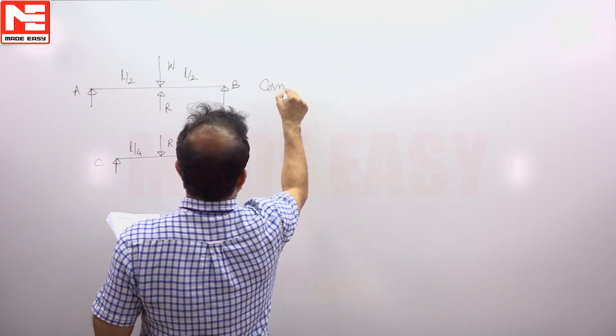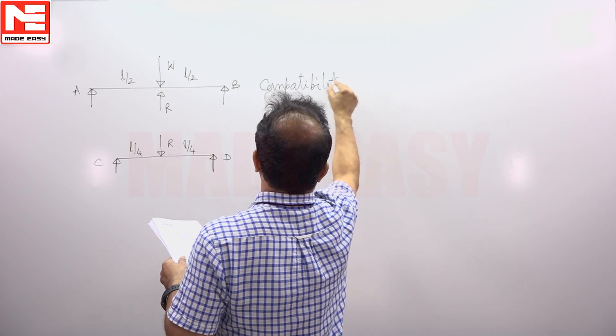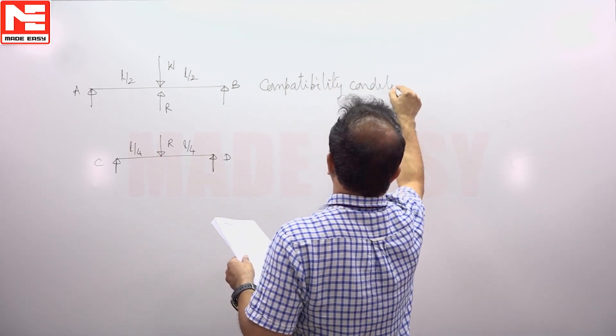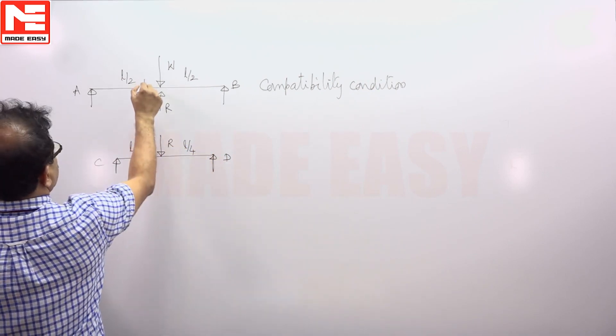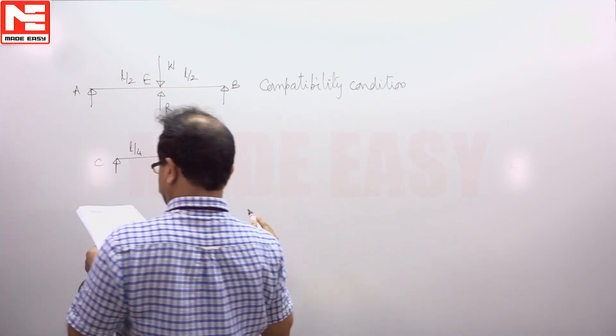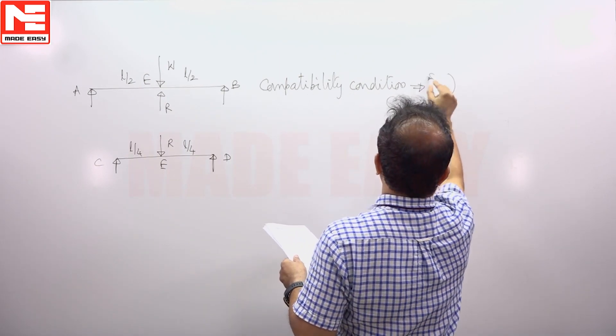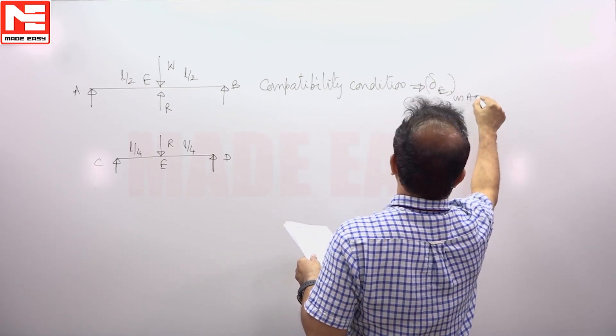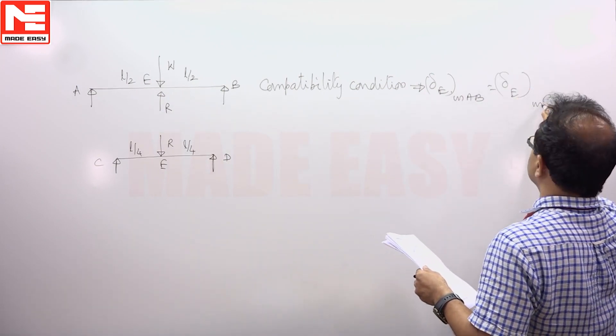So compatibility condition AB this point is E, this point is also E. Delta E in AB is equal to delta E in CD.